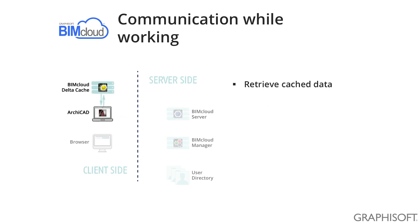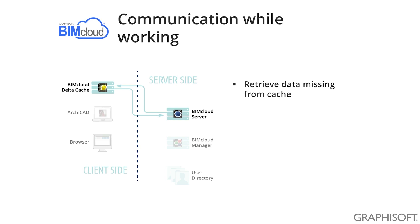When there is a large amount of data to be downloaded from the BIMcloud Server, ARCHICAD will go to the BIMcloud Proxy and check if this data is already available locally. If it is, the BIMcloud Proxy will return it to ARCHICAD and the work can continue. If the data is not yet available on the BIMcloud Proxy, the Proxy will go to the BIMcloud Server, download this data locally, and send it back to ARCHICAD. For the next ARCHICAD user who requests the same data, it will already be available on the BIMcloud Proxy.